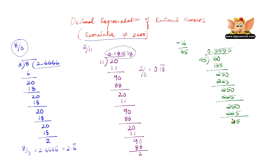The decimal representation of minus 16 by 45 is minus 0.355... Since 5 keeps repeating, we write this as minus 0.35 bar, where the bar on top of 5 indicates that 5 repeats itself from that point on.